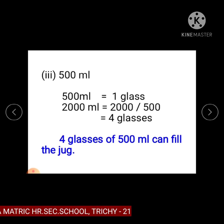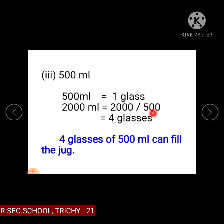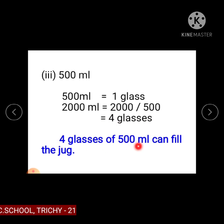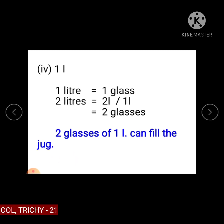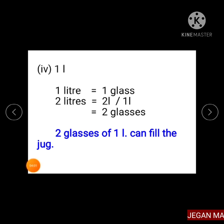Subdivision 3: 500 ml. Here, 500 ml is considered as 1 glass. Therefore, 2000 ml divided by 500 equals 4 glasses. So, 4 glasses of 500 ml can fill the 2 litre jug. Subdivision 4: 1 litre. 2 litre jug divided by 1 litre equals 2 glasses. So, 2 glasses of 1 litre can fill the 2 litre jug.